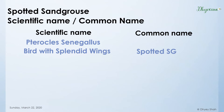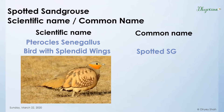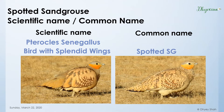The common name is 'spotted sand grouse,' but how are the common and scientific names related? The scientific name is named after the male, as it clearly has splendid wings. The common name is named after the female, as it has spots all over its body.